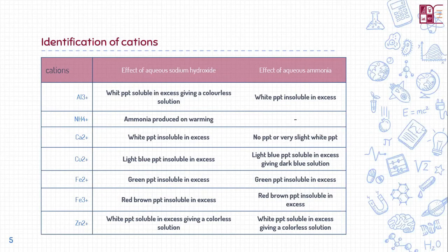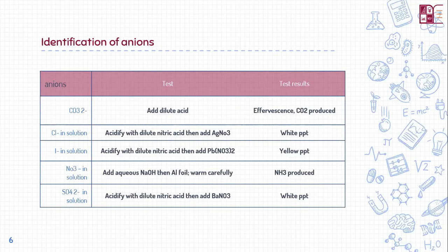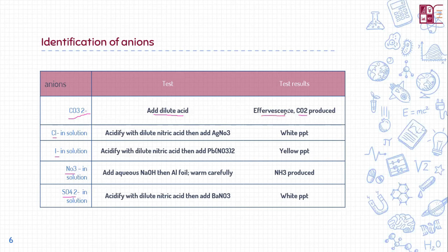Now for identification of the anions: first we have carbonate, then chloride, iodide, nitrate, and sulfide. The test for carbonates is that you add dilute acid — whatever the dilute acid is — and it will always produce carbon dioxide gas, causing effervescence. Effervescence refers to those small bubbles which form.